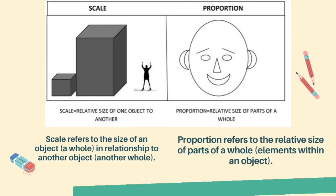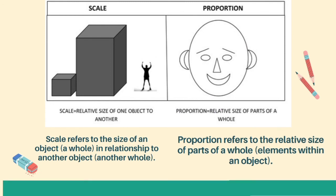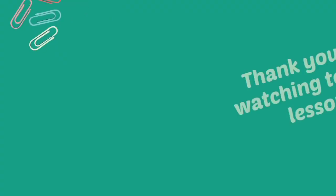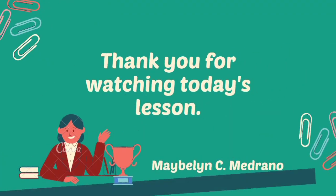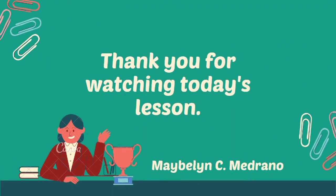Scale refers to the size of an object in relationship to another object, while proportion refers to the relative size of parts of a whole. That's all for today — thank you for watching today's lesson. Please subscribe to my YouTube channel.